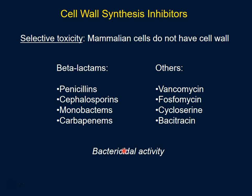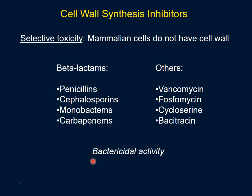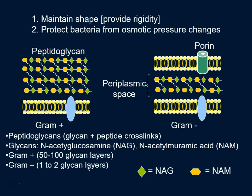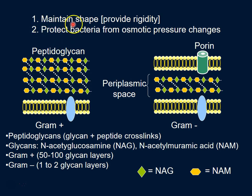That causes cell death in bacteria, and I'll provide one theory behind why inhibitors of cell wall synthesis have a bactericidal effect. So let's look at the cell wall again — we've talked about this a little bit before, but just to review.